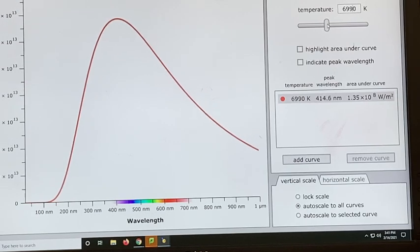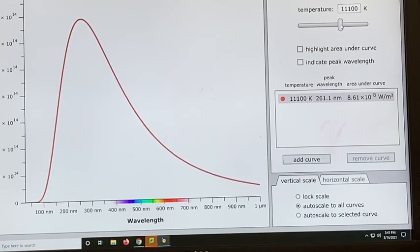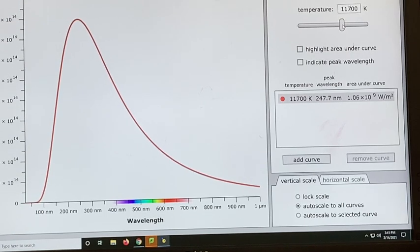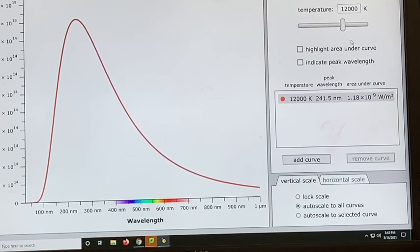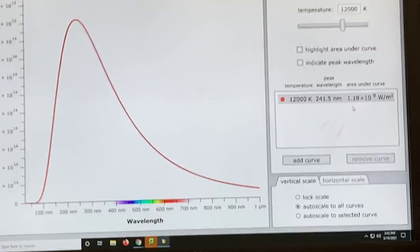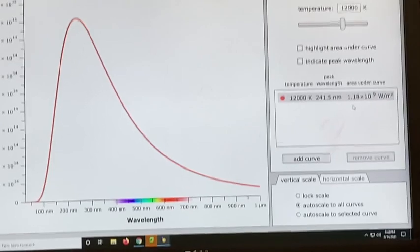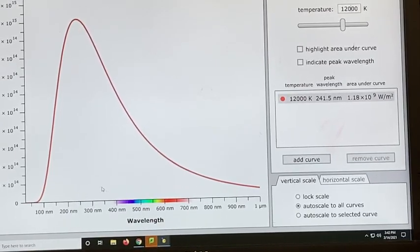Now we're going to go up to 12,000. Okay, our peak wavelength is now down to 241.5, well into the ultraviolet. Our radiation now here is 1.18 billion watts per meter squared, 1.18 billion. So here's our visible spectrum way down here. Most of our radiation for an object this hot would be in the ultraviolet.